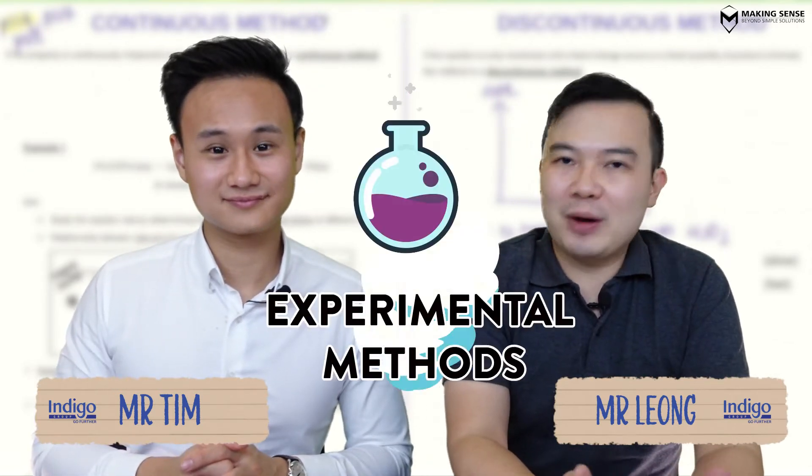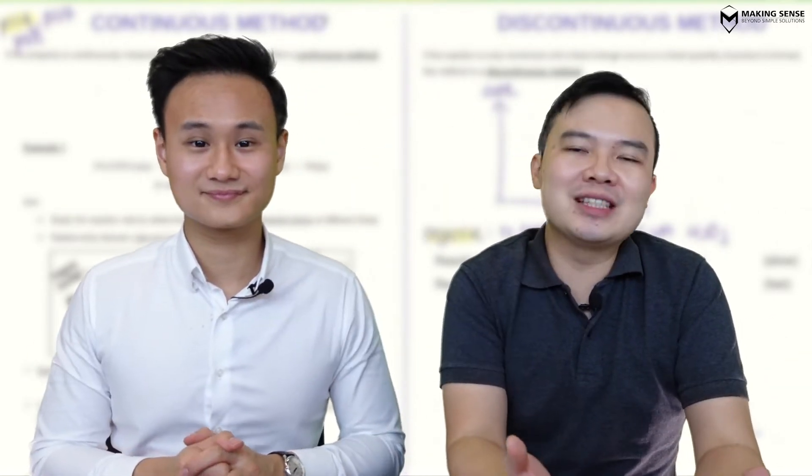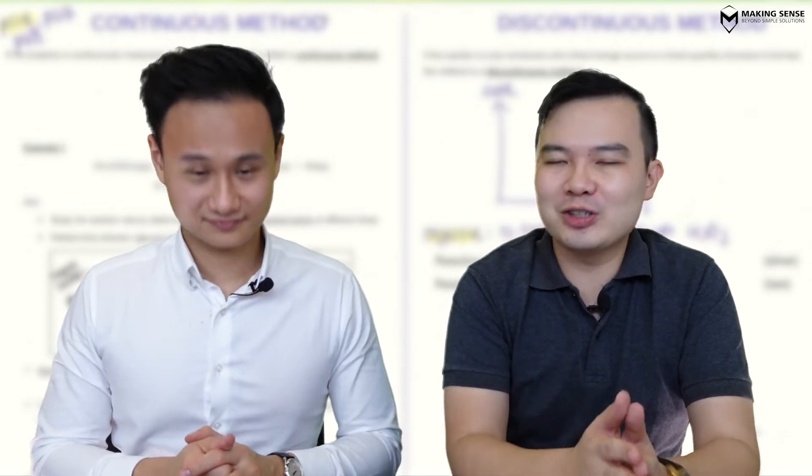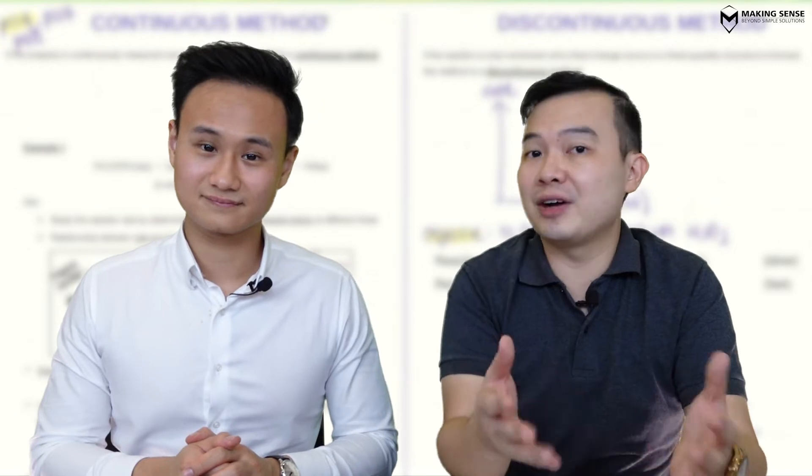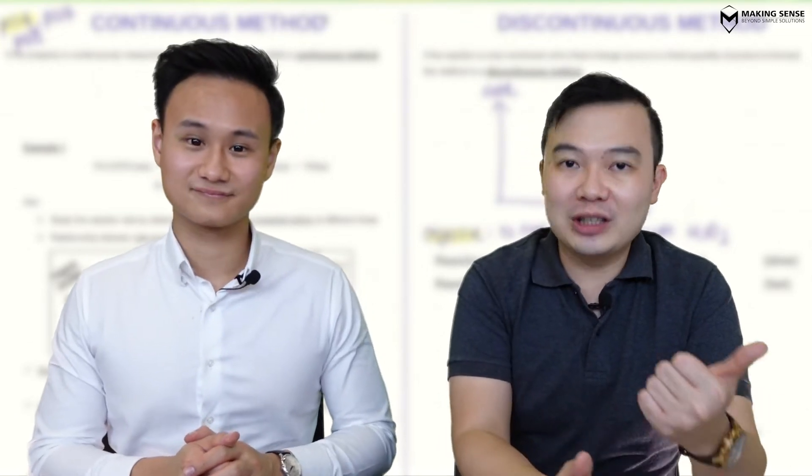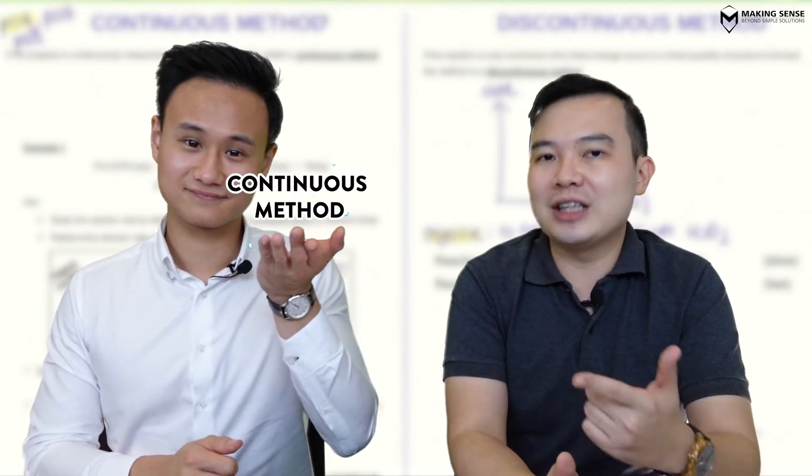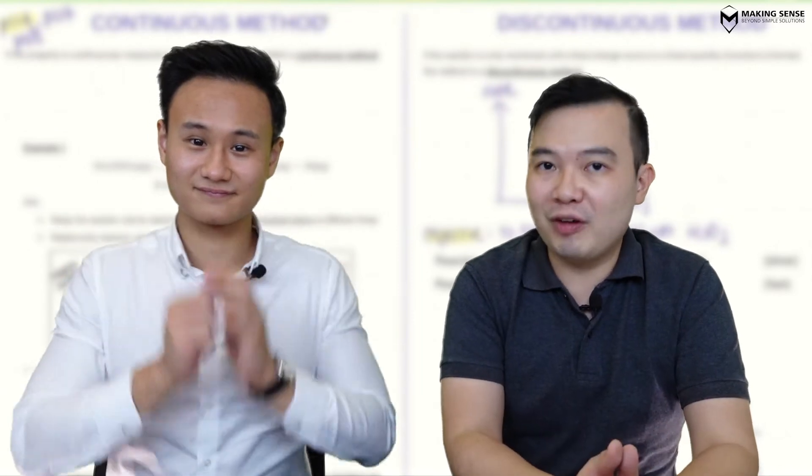Hi students, welcome back. So in this video, we're going to take a look at experimental methods, which is going to be very similar to what you see in practical. So all the experiments that we're doing in practical can be broadly classified into two different kinds of methods. First of which is called the continuous method. The other one is called the discontinuous method.